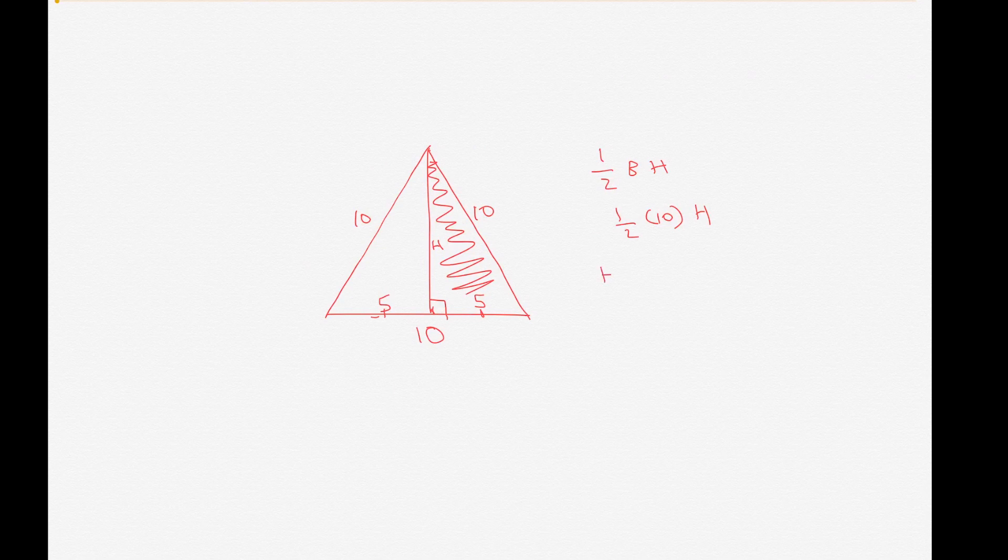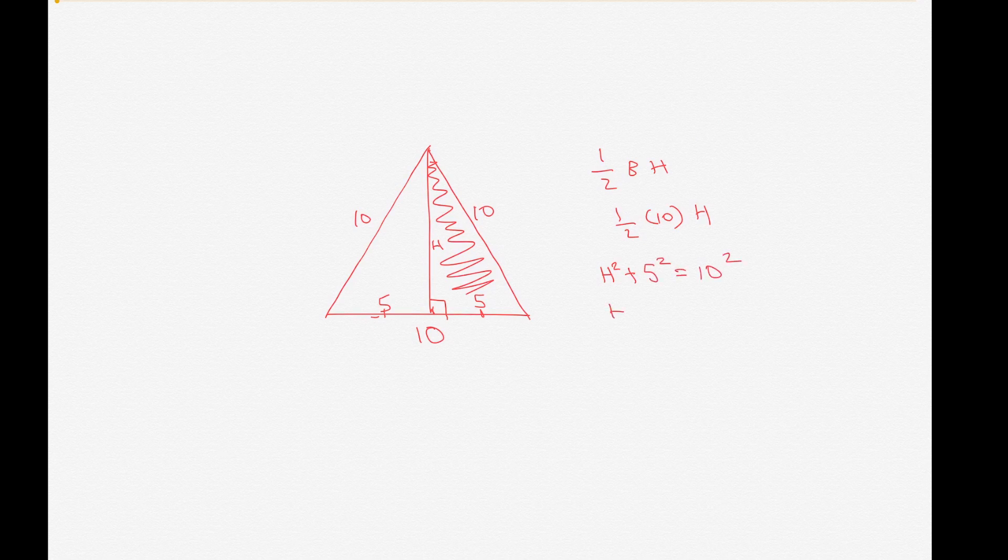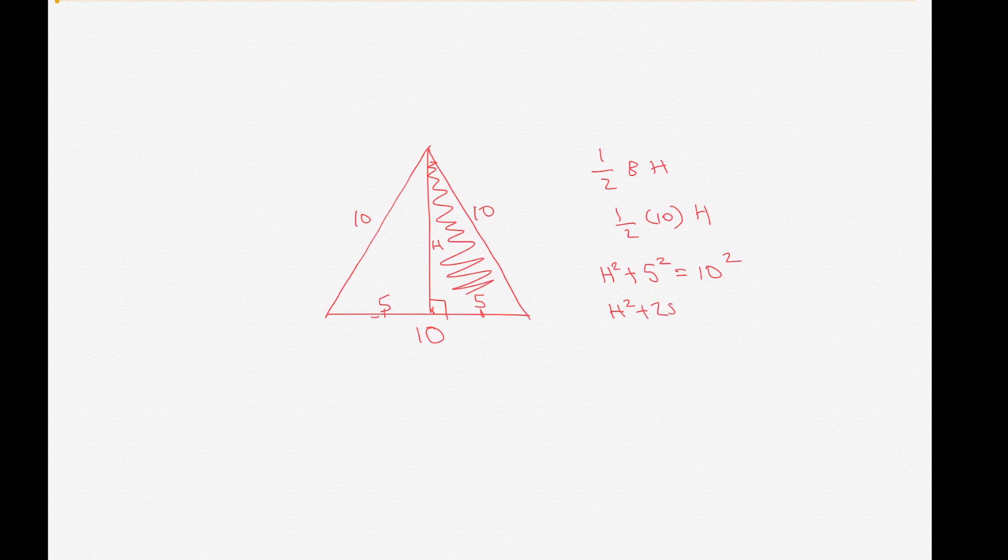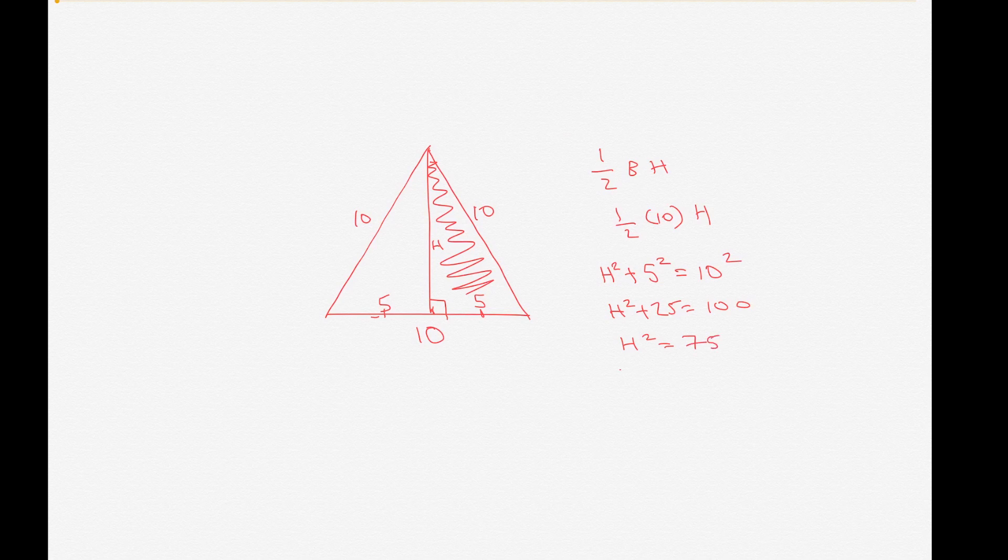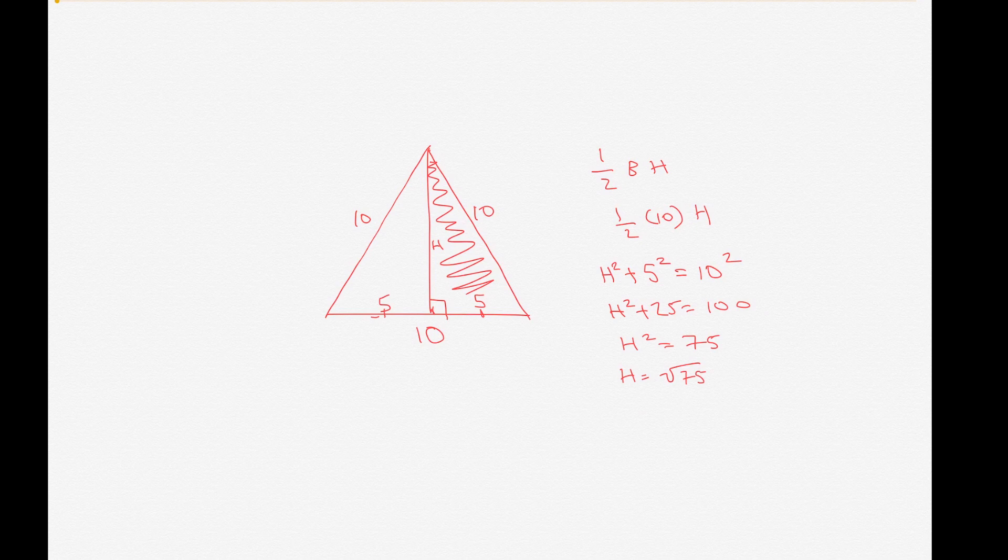Using the Pythagorean theorem we can get h squared plus five squared equals ten squared. So that would be h squared plus twenty-five equals a hundred. Subtract twenty-five from each side. h squared equals seventy-five. h equals square root of seventy-five.